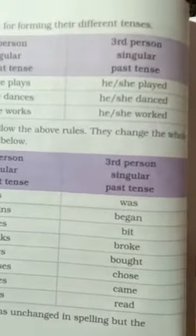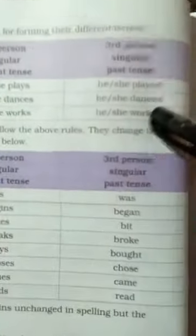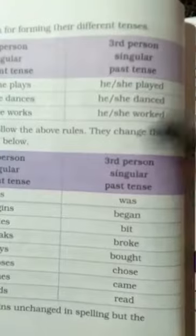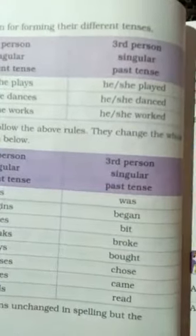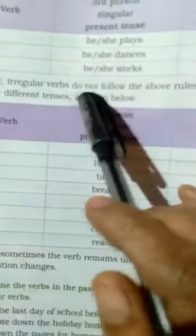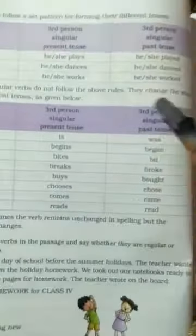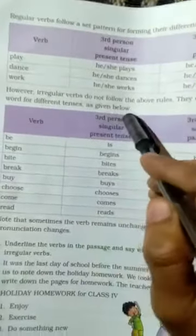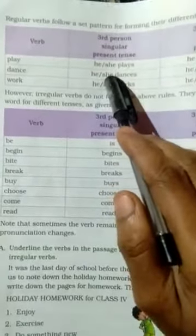In the singular past tense, ED is added to the main verb. Dance also is the same — she danced or he danced. Work — he or she worked. Worked means that is in the time of singular past tense. However, irregular verbs do not follow the above rules. They change the whole verb for different tenses.